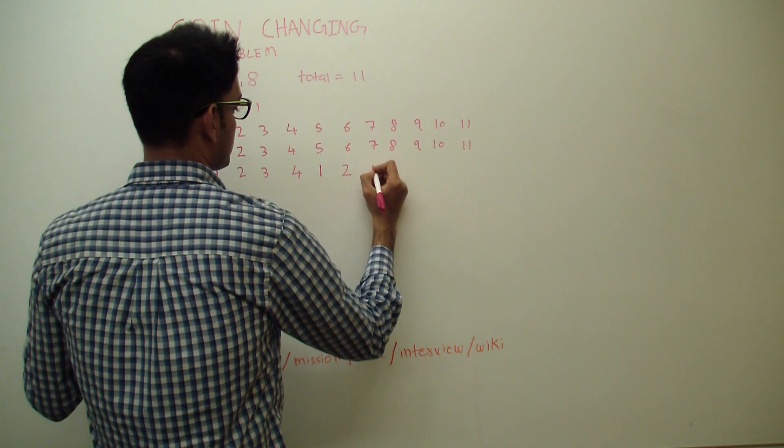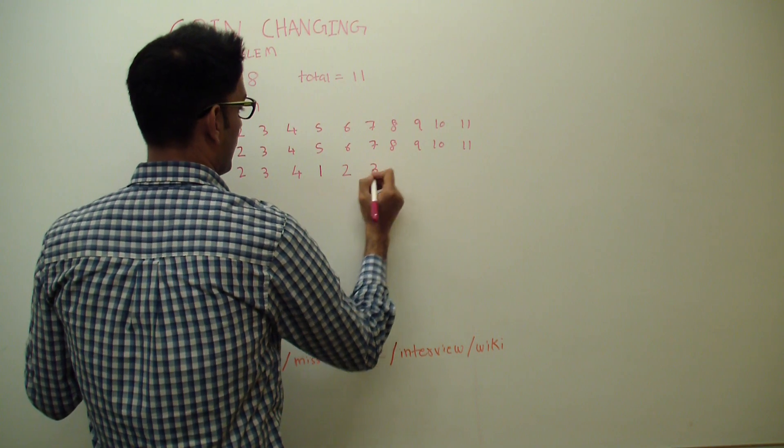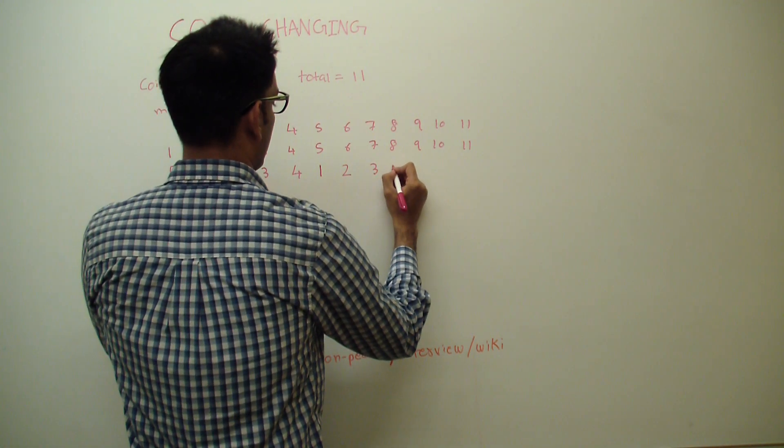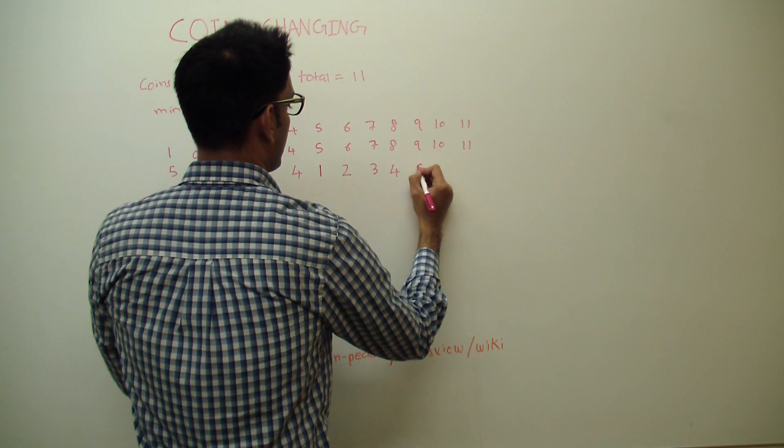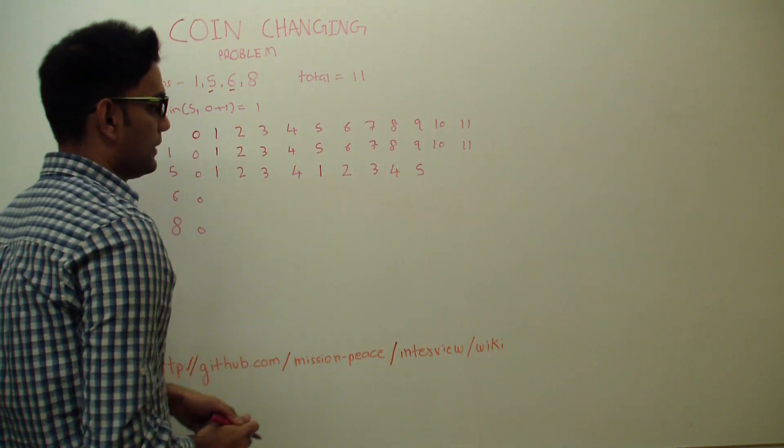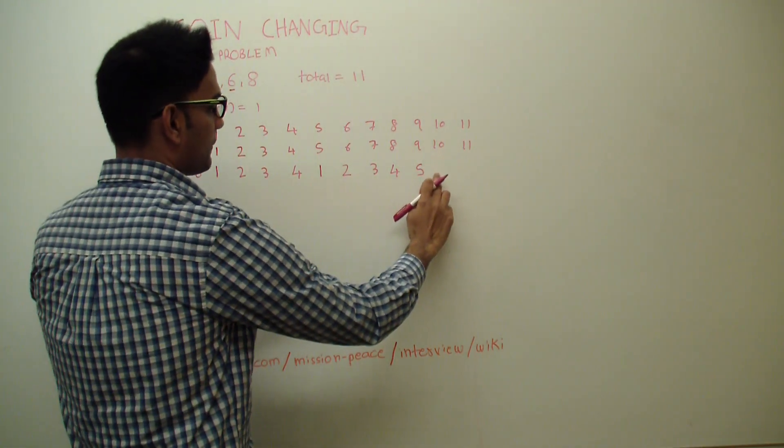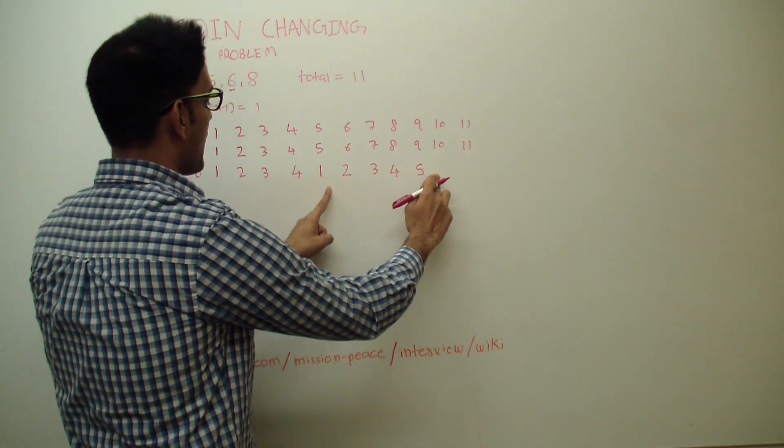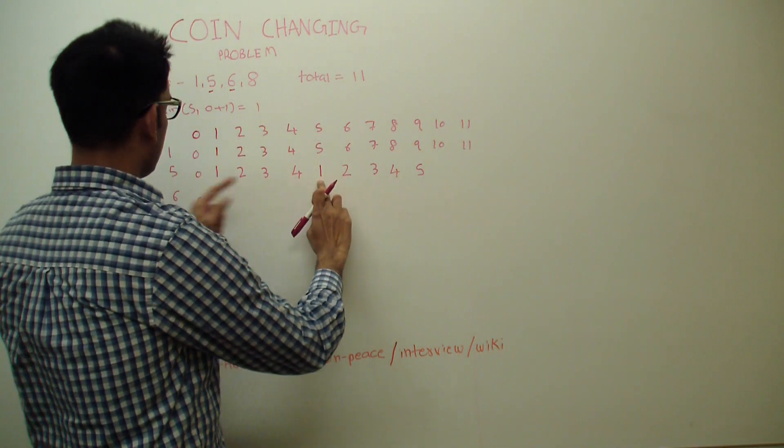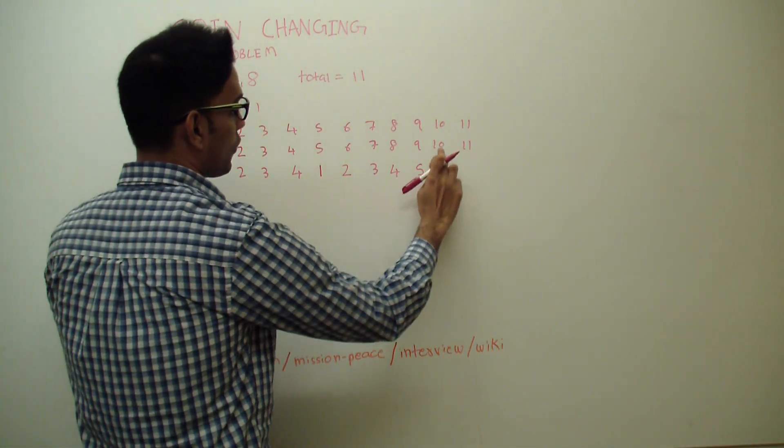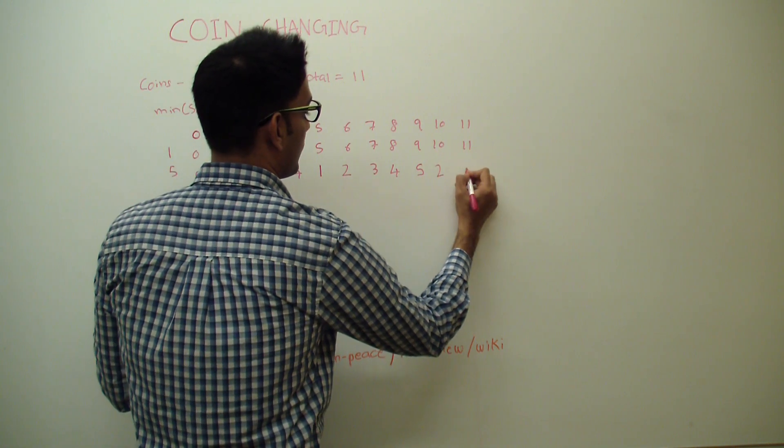This will be 3, 4, 5, so here. So to get 10, we'll go 5 steps back and we'll be here. So the minimum number of coins will be 1 plus 1, so 2 or 10, so 2. And this will be 3.